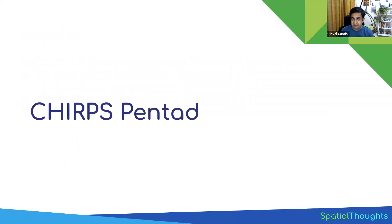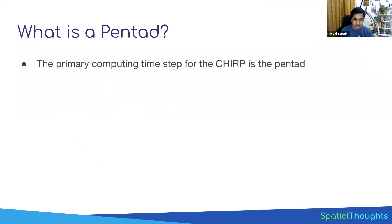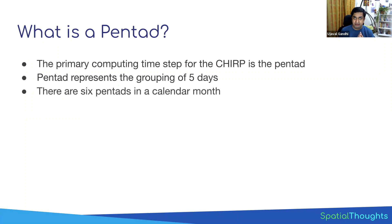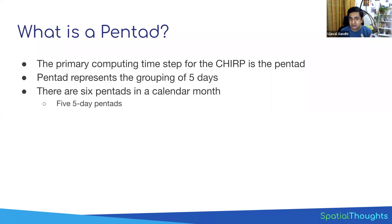This dataset comes in a slightly different format. The primary unit of measurement is something called a pentad — a grouping of five days. You may be familiar with daily data or monthly data, but this dataset comes as five-day data. Each image in the dataset represents five days of rainfall. This is because the methodology relies on other datasets generated in five-day series, so this data is derived from those and comes as a grouping of five days.